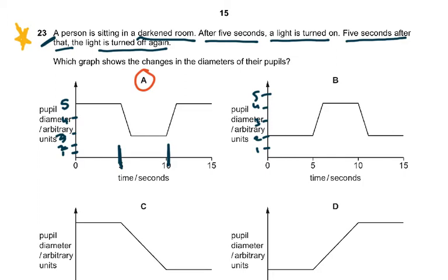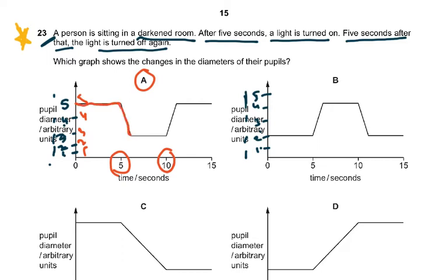First, the person is sitting in a dark room so the pupils will be larger. When doing a graph, just write some figures on the side: 1, 2, 3, 4, 5. This is the pupil diameter in arbitrary units. If the pupil size was 5, when the light was switched on at five seconds, the pupil size would decrease. It went from 5 down to 3, stayed at 3 for five seconds, then went back up to 5.